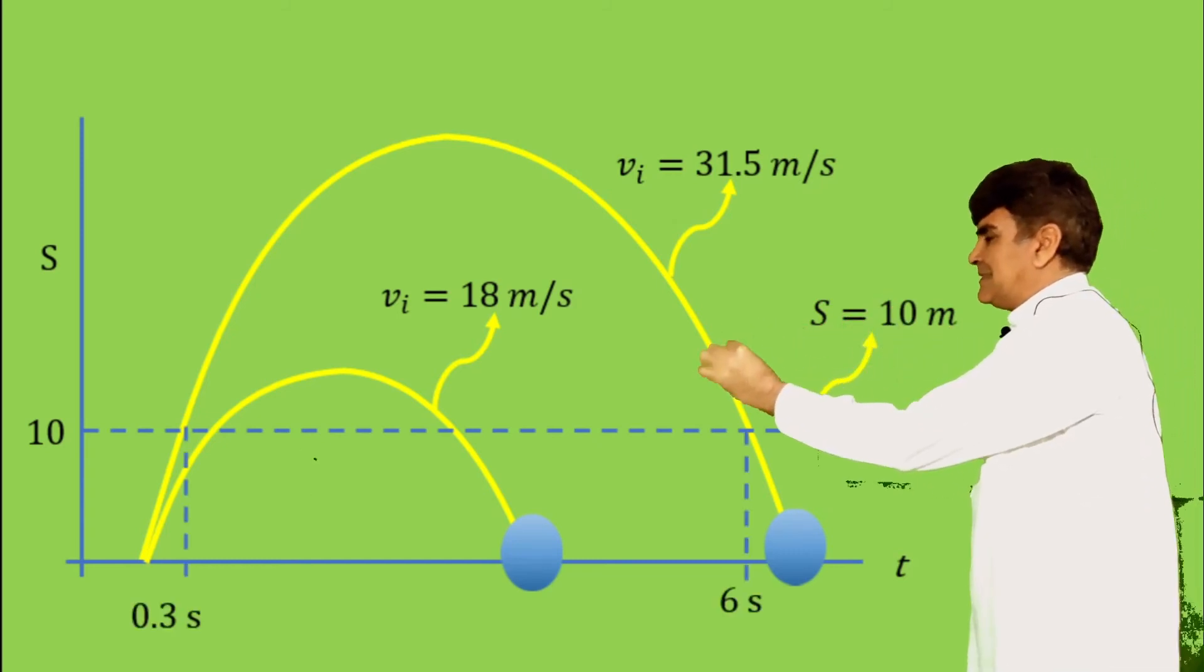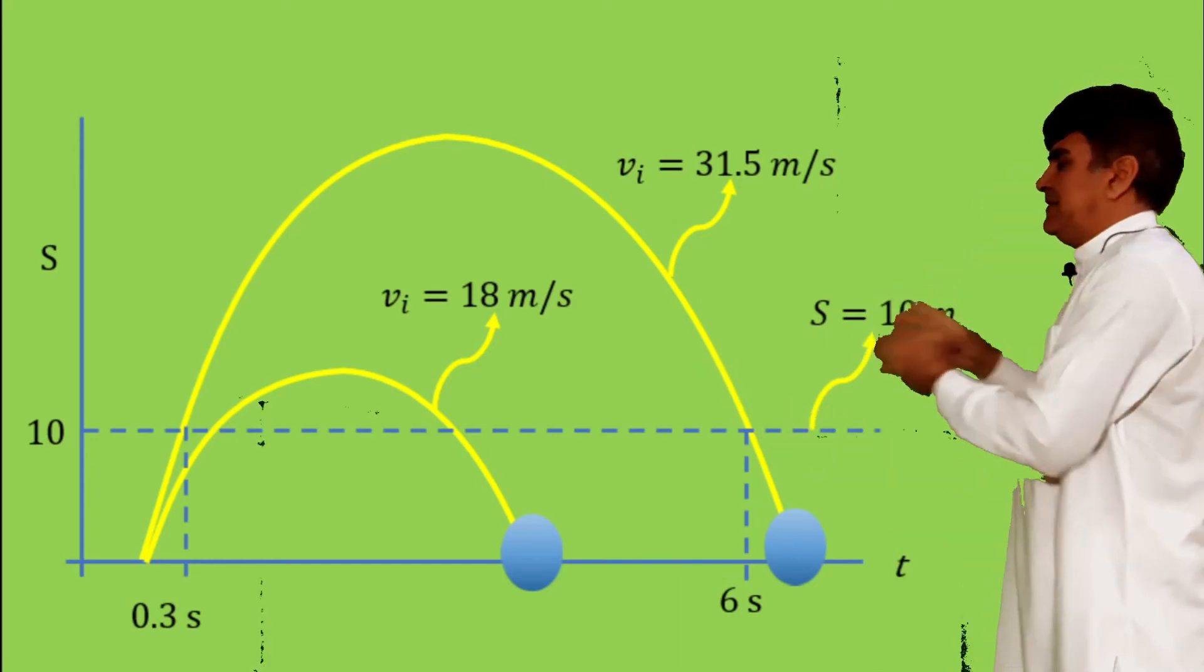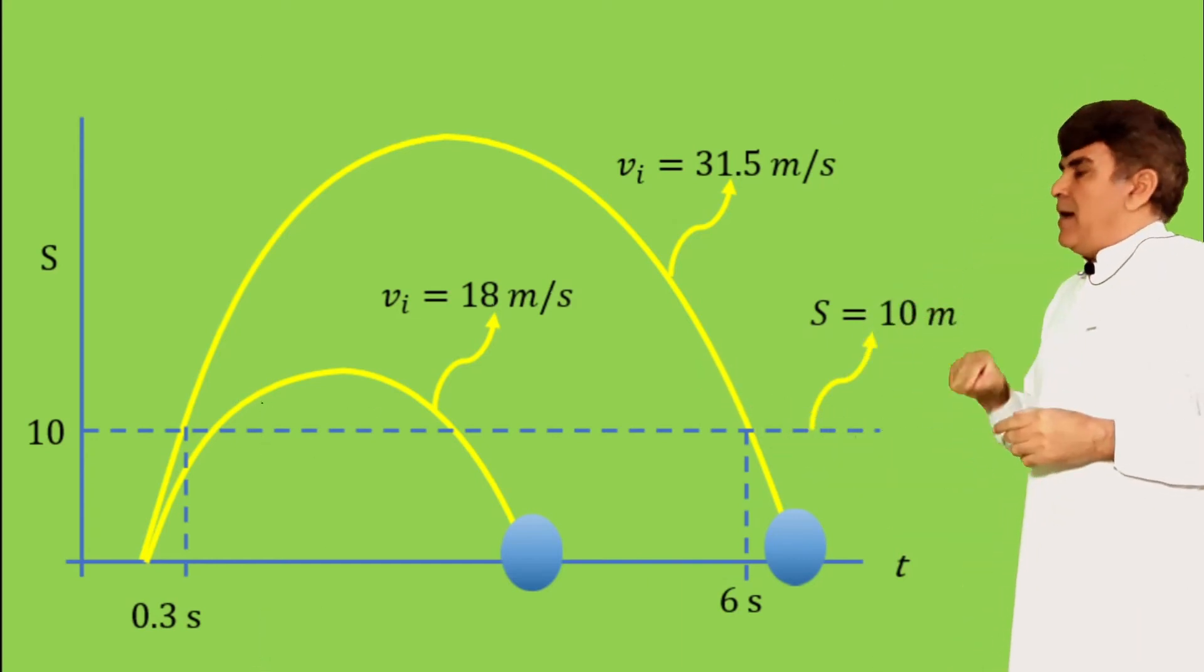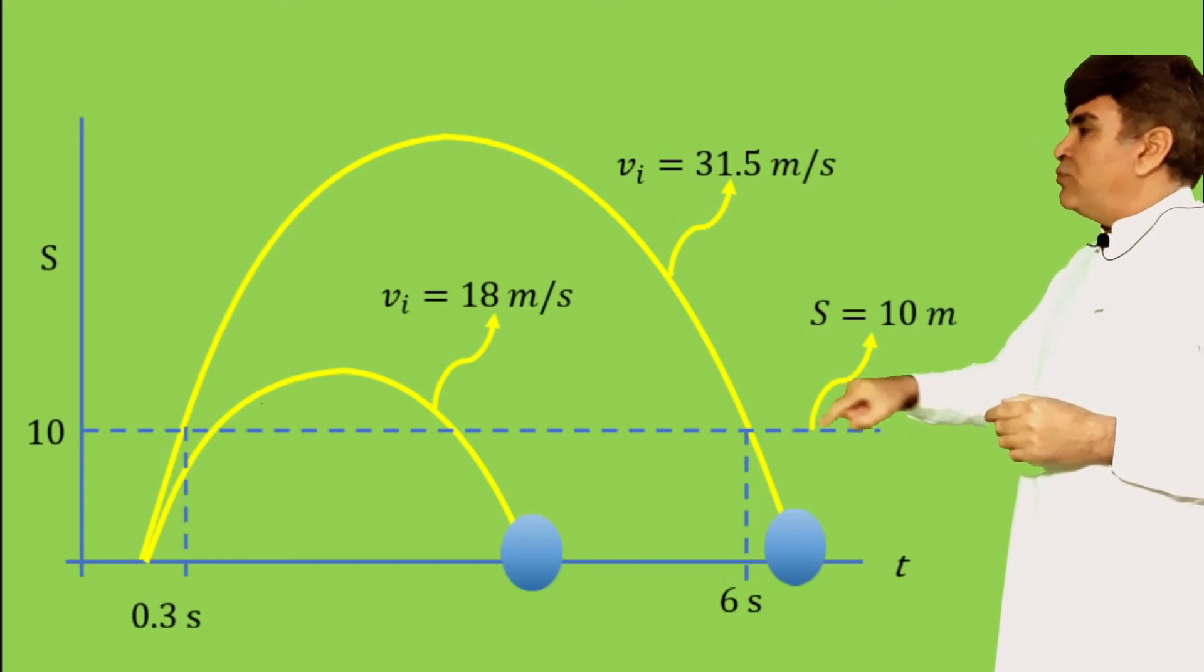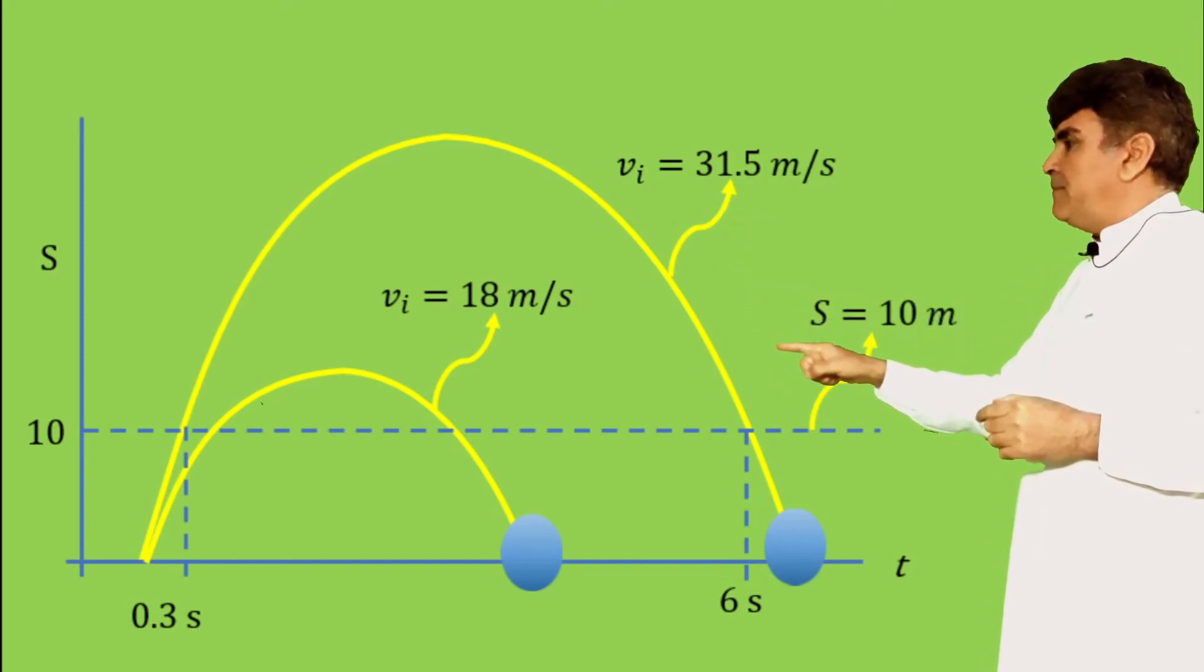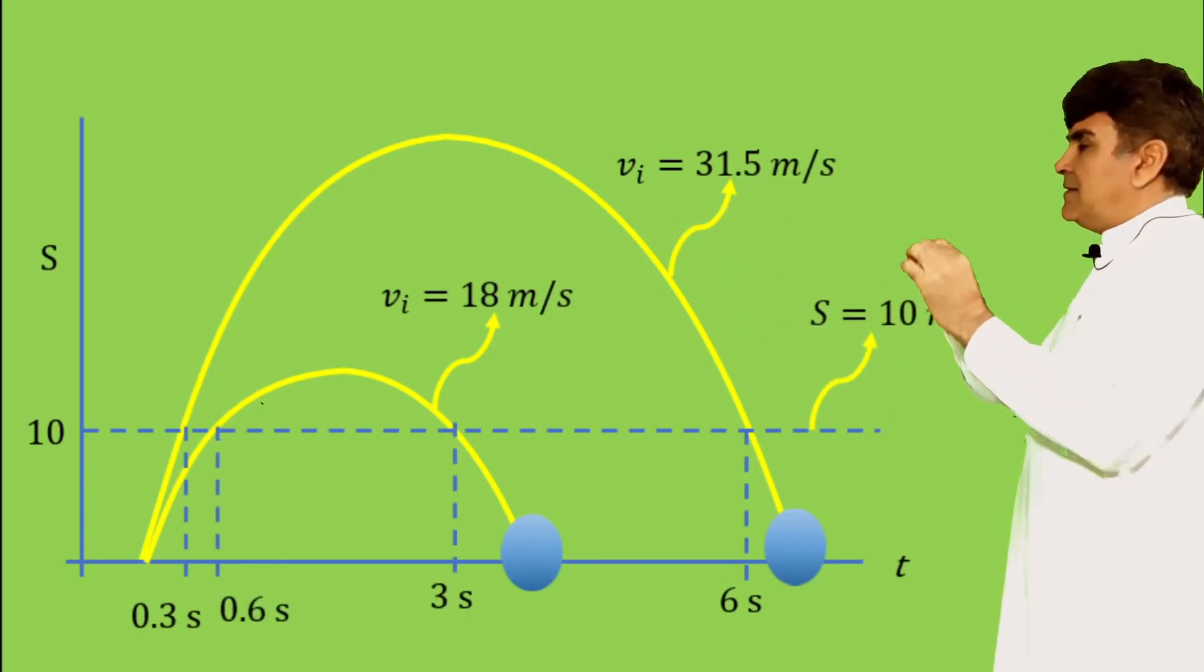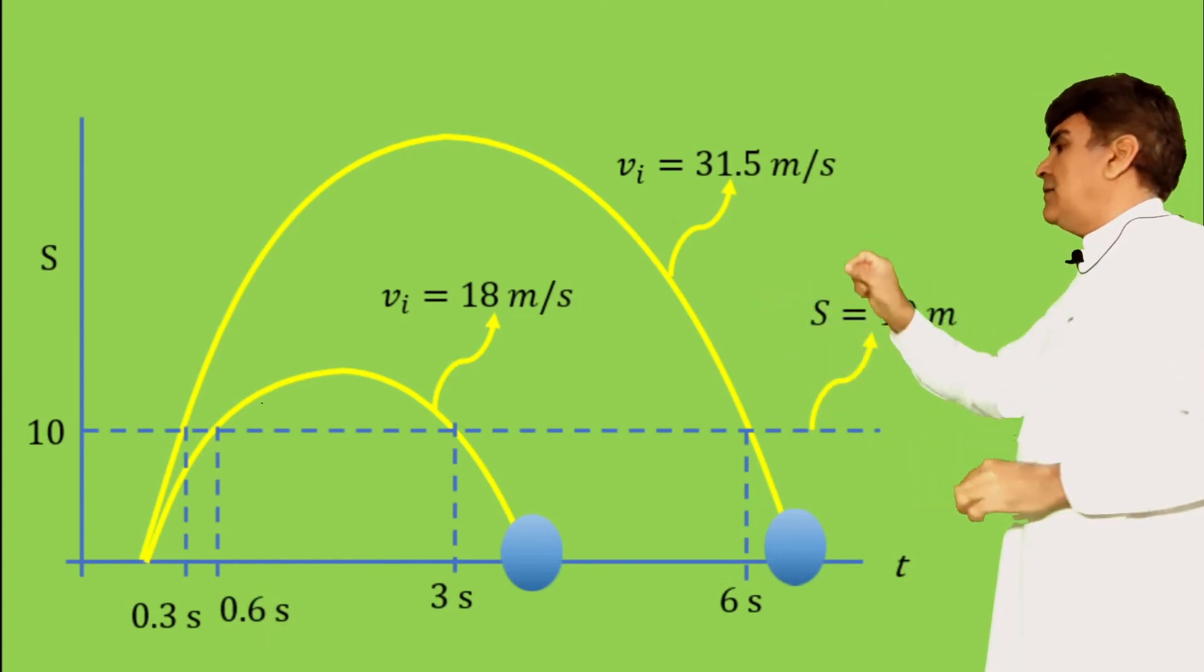You see the first ball moved along the large parabolic path hits the 10 meter height at two different times, one at 0.3 seconds and the other at 6 seconds. And the second one that moves along the small parabolic path hits the 10 meter height at 0.6 seconds and 3 seconds.